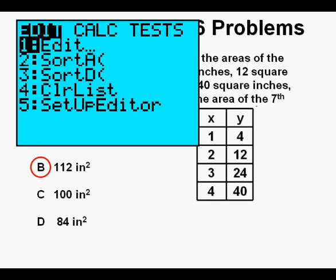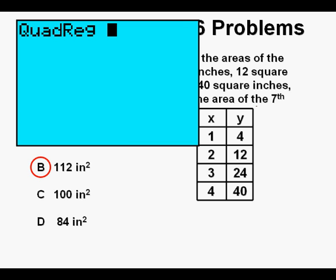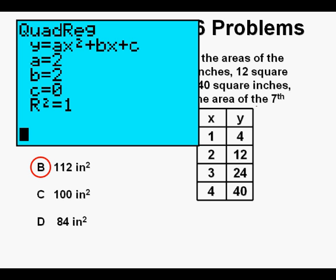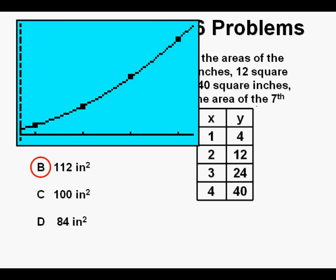So now we'll try to find an equation to fit the points by pressing STAT, then arrow once to the right for the CALC submenu, then arrow down to option 5, the quadratic regression. We go here because when we looked at the points, we didn't see the points lined up, and on TAKS, the next most common relation tested is a quadratic relation. Press ENTER. Press ENTER again. These two numbers, A equals 2 and B equals 2, mean the quadratic function is Y equals 2X squared plus 2X. And we can go back to Y equals and enter the equation Y equals 2X squared plus 2X. Then press GRAPH. We see a perfect fit as the curve goes through all the points nicely.